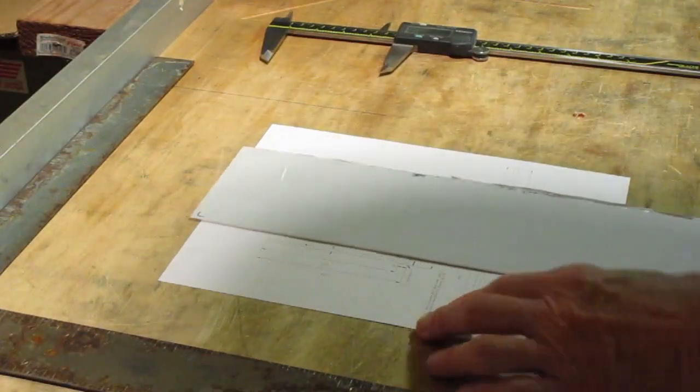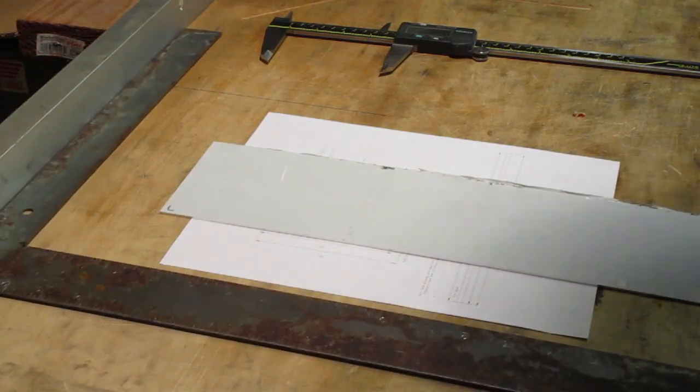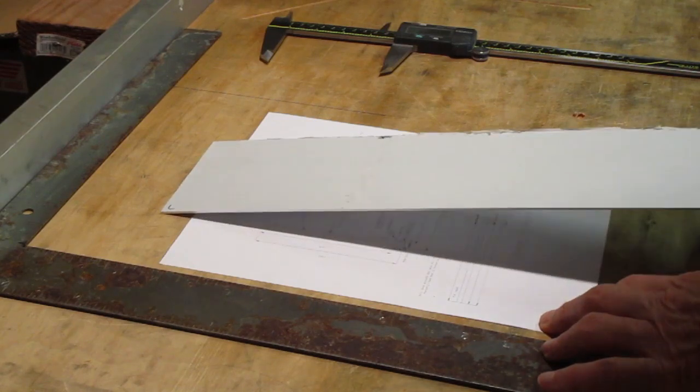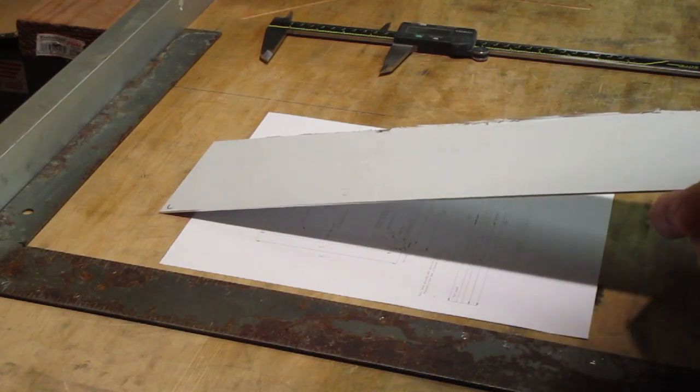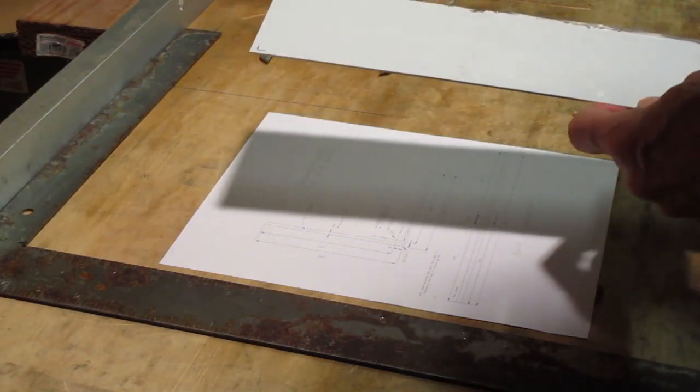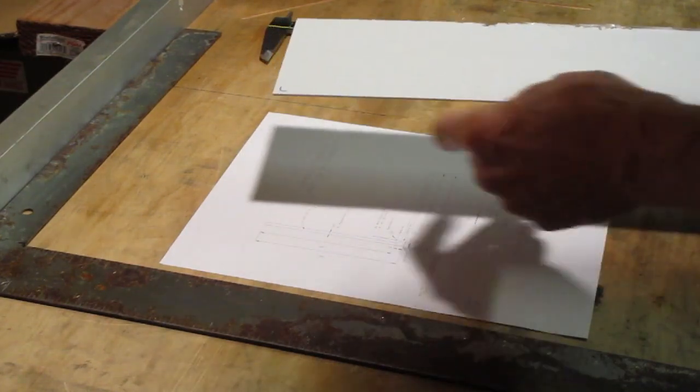Okay we talked about K factor, theory, bend allowance, we did a little 3D modeling, covered that pretty well. So we're going to actually take it off the drawing board and make an actual piece. That piece is going to be the L bracket or L angle with 2 inch sides.